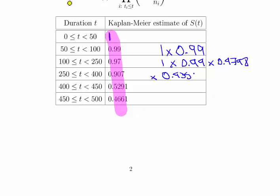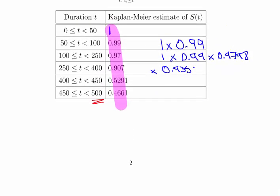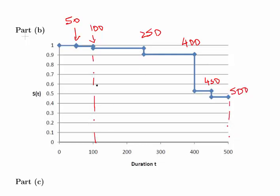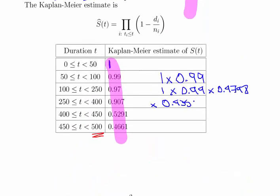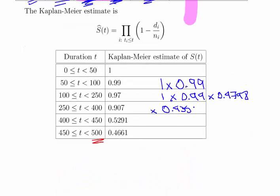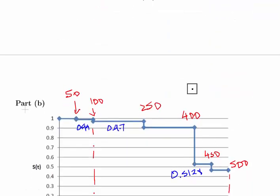A remark: the experiment goes on to 450 hours, and that is where the censoring ends. To sketch the step function, the x-axis points are at 50, 100, 250, 400, 450, and 500. The heights of the step function drop accordingly — to 0.99, then 0.97, and so on, down to approximately 0.5291 at the final step.